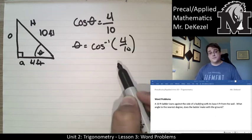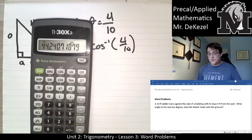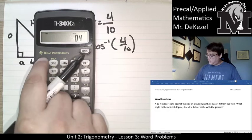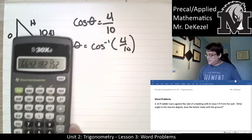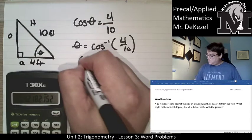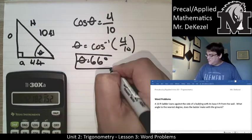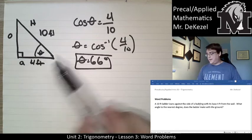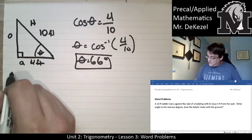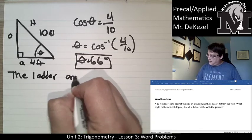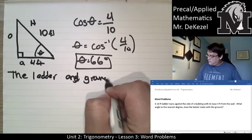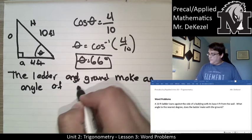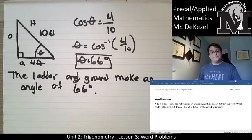So 4 divided by 10 equals 0.4, then applying inverse cosine gives 66.4 degrees. To the nearest degree, that is 66 degrees. The ladder and the ground make an angle of 66 degrees.